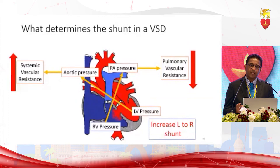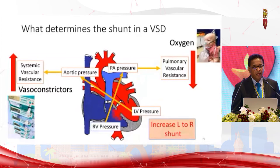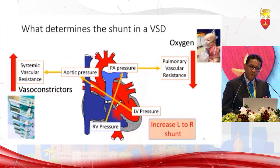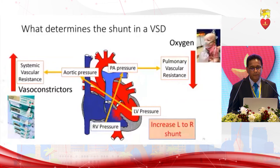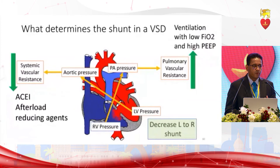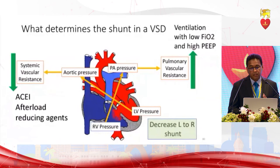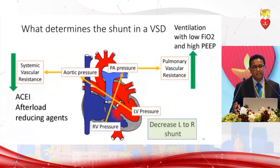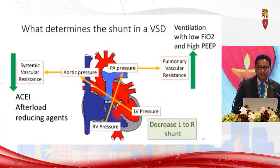When a VSD patient comes to the ward, we often start oxygen. If there is low blood pressure, we give vasoconstrictors. But these are counterproductive — they increase systemic vascular resistance and further increase the shunt. ACE inhibitors and afterload-reducing agents, if blood pressure is acceptable, are the best intervention. If the patient is moribund, ventilate with low FiO2 and high PEEP — high PEEP opens alveoli and increases pulmonary vascular resistance; low FiO2 prevents opening up of pulmonary circulation.